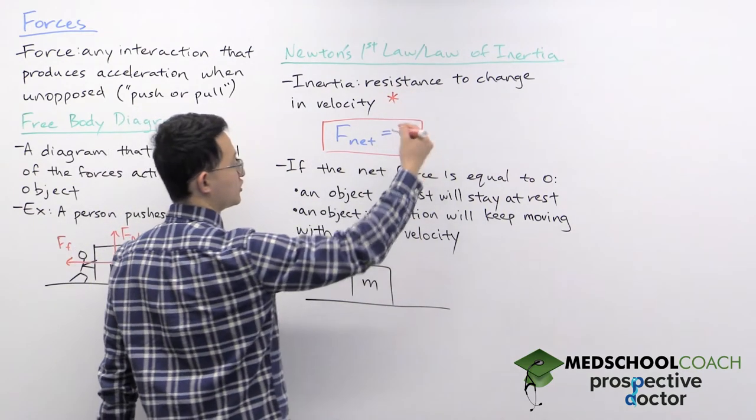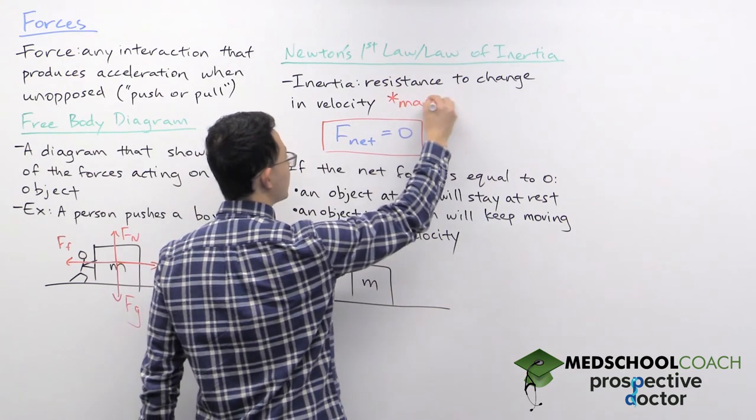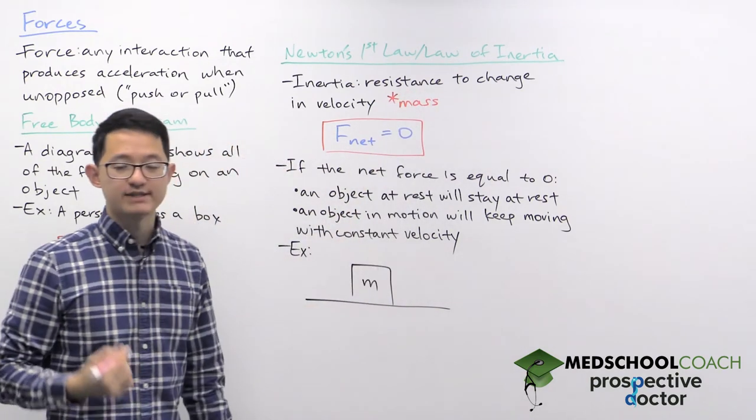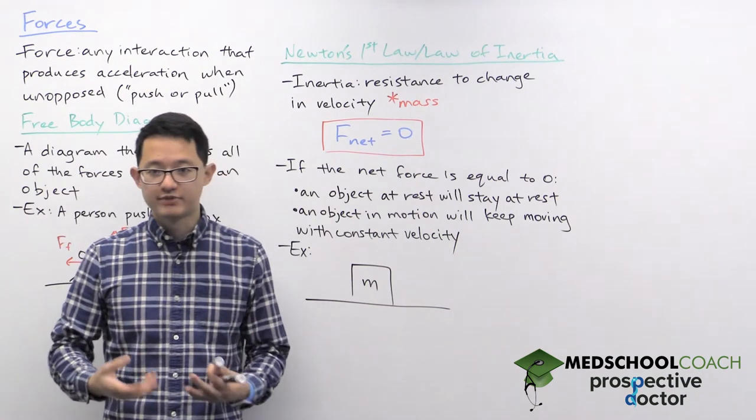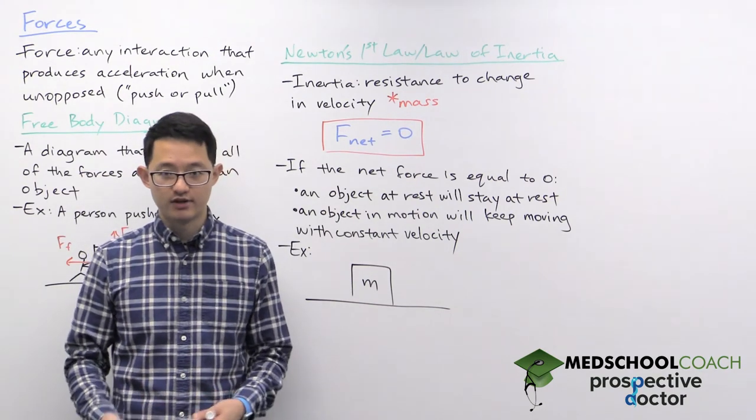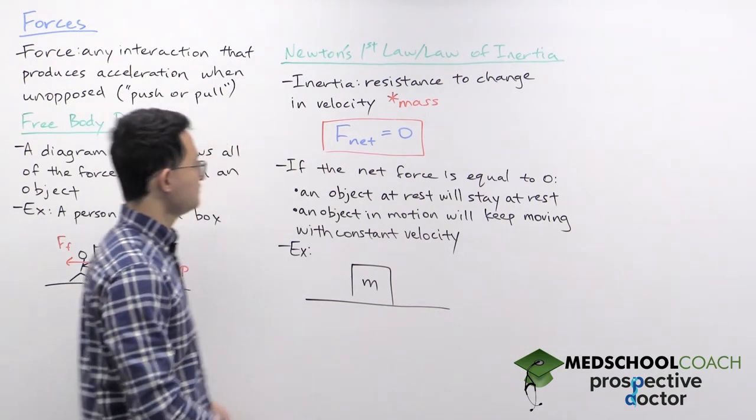And you might have figured that out, but for translational motion, inertia can be quantified as the mass of an object. The more mass an object has, the harder it is to change its velocity.